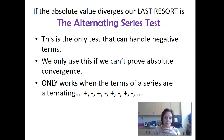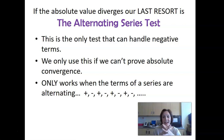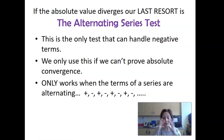In other words, it's not good enough to just have some negatives. It has to be that plus, minus, plus, minus pattern back and forth. You can't have minus, minus, plus, plus, minus, minus, plus, plus — that won't work. It has to be a true alternating between plus and minus, the kind that's only produced by a negative one to the n in the rule, or a negative one to the n plus one, something like that.